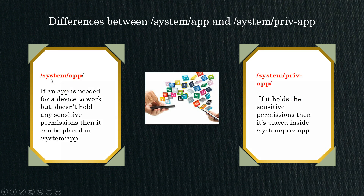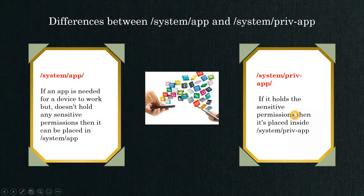If an app is needed to work for a device but does not hold any sensitive permissions, it can be placed in the system app partition. But if the app holds sensitive permissions that are very important to manage carefully — because if ignored they may destroy files in the Android system or lead to unfavorable conditions — then we place it in the system priv-app folder.